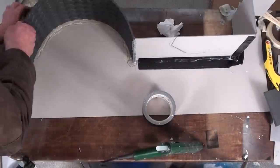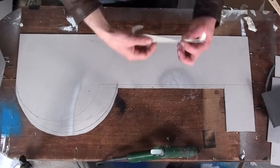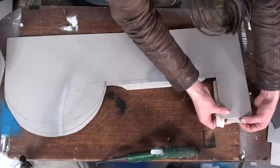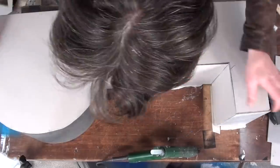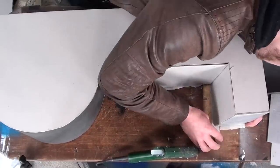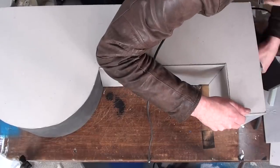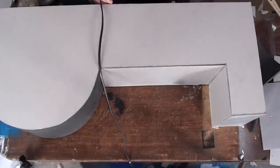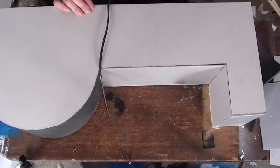Once that's dry, it's time to work on the other side. Using the previous technique of masking taping one side to hold it in place and then gluing it from the inside, hot gluing it in place. And then once the hot glue is done, reinforce the inside with some duct tape.